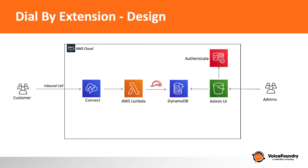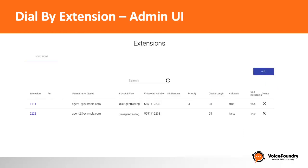Let's take a quick look at an example administration UI. I'm currently showing the administration UI logged in. Prior to this I would have received a splash page to log in with my Amazon Cognito credentials. We can see on the left hand side we've got extension 1111, and we also have a username or queue that it is mapped to, along with some additional configuration items. What I really want you to walk away knowing is that the extension number on the left maps to the agent's username. This means you could provide this user interface to your call center administrators and they can go in and configure and make changes as required.